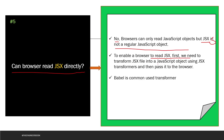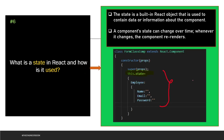To enable a browser to read JSX, first we need to transform the JSX file into a JavaScript object. Everything written in React is written in JSX, so the JSX file is converted to a JavaScript object with the help of a transformer. Babel is a common transformer used nowadays for this purpose.